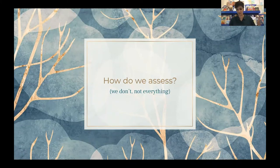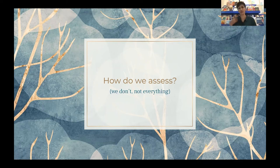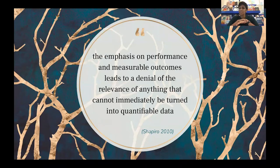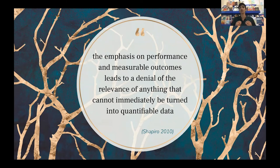This brings back the classic question: how do we measure that learning? How do schools check for success? How do parents, students and teachers know what is happening in their classroom and how are they making sure they're getting the outcomes they need? The answer is we don't assess everything — we can assess for learning, but we do not have to measure it necessarily against a restrictive gauge. This quotation sums it up perfectly: 'The emphasis on performance and measurable outcomes leads to a denial of the relevance of anything that cannot immediately be turned into quantifiable data.' This is something that globally we really struggle with. Working with more qualitative data is something I think teachers should get used to when measuring learning — we work with qualitative data all the time when looking at student wellbeing, so we can translate those skills into understanding their learning as well.